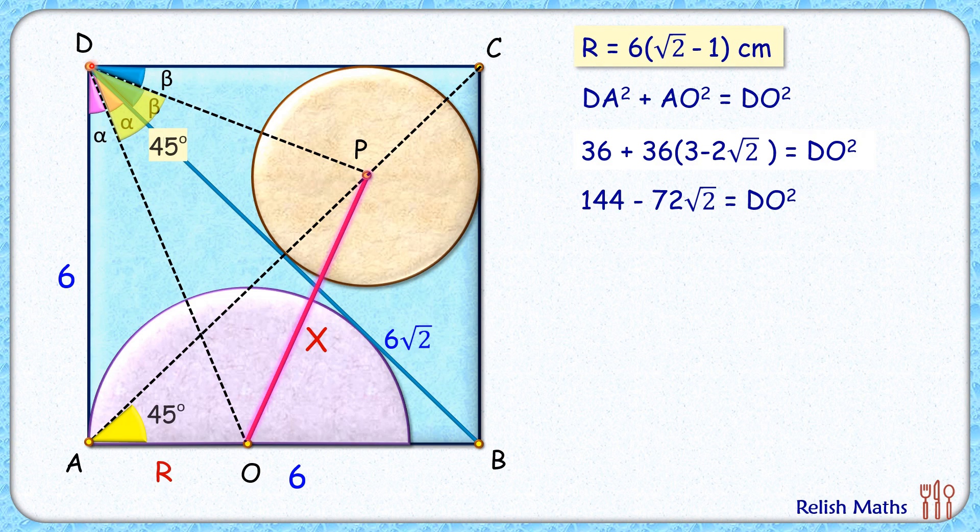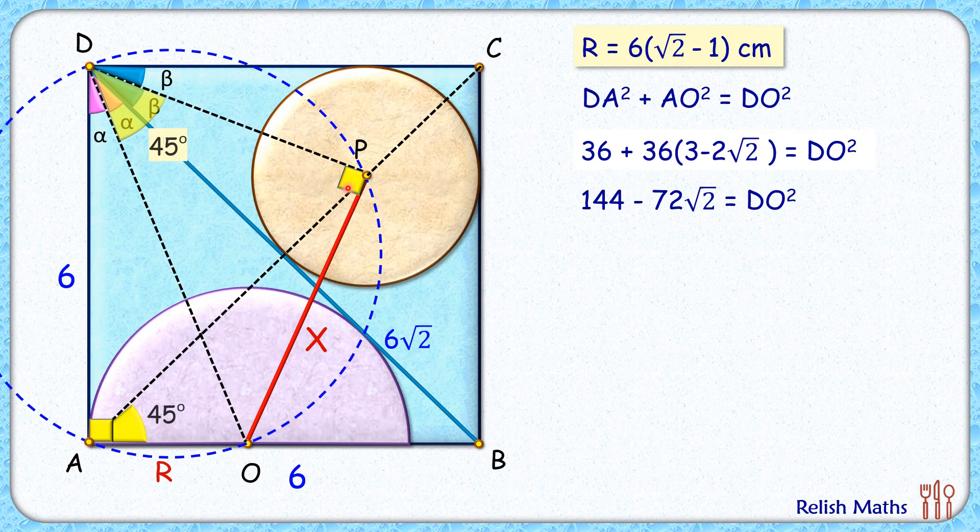Let's draw a circle which is passing through point D, P, O, and A. Now here in this circle, AOPD is a cyclic quadrilateral where angle A is an angle of the square, so this angle is 90 degrees. As opposite angles are supplementary, thus angle P here is also 90 degrees.